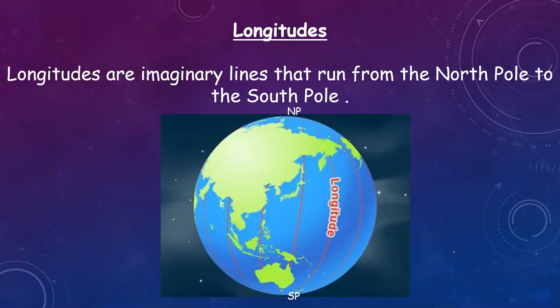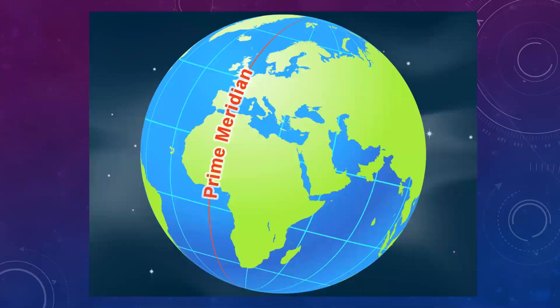Now let us learn about longitudes. Longitudes are imaginary lines that run from the north pole to the south pole. Lines of longitudes are known as meridians. They are measured in degrees.